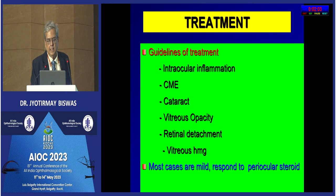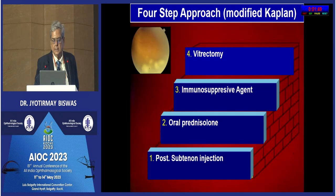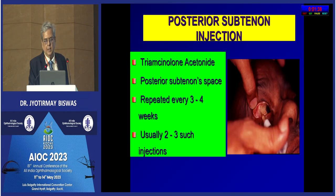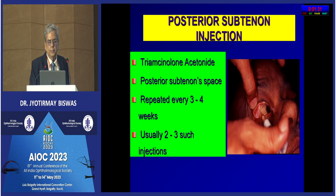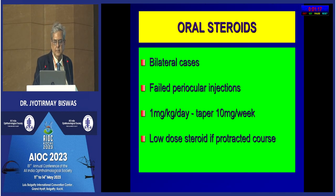Management depends on the grade of intraocular inflammation, presence or absence of CME, cataract with zonular laxity, tractional retinal detachment, and vitreous hemorrhage. Most mild cases respond to posterior subtenon injection. Earlier I used to give posterior subtenon injection as first line, but now I prefer more systemic treatment. A posterior subtenon injection is given and repeated every four weeks; one to two such injections are required. For bilateral cases or failed periocular injection, oral steroids at 1 mg/kg/day, tapering 10 mg per week, are used.